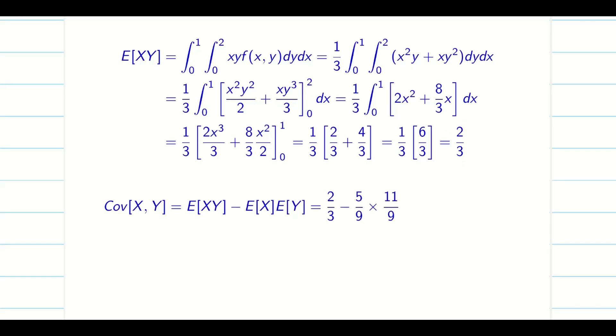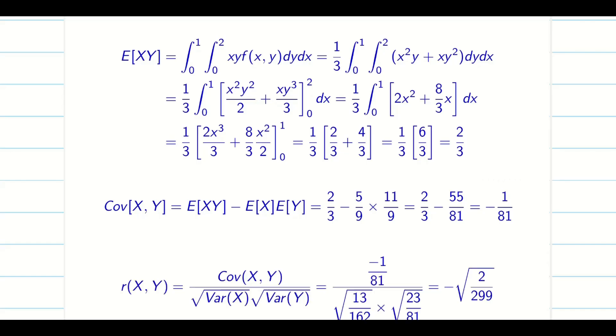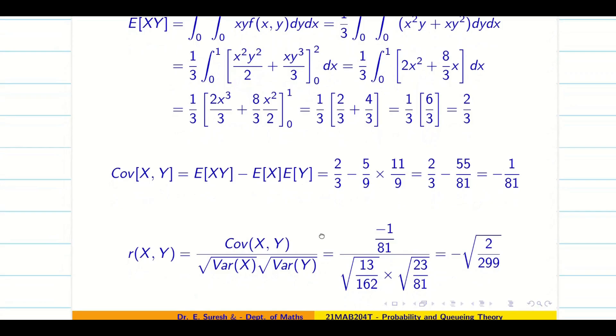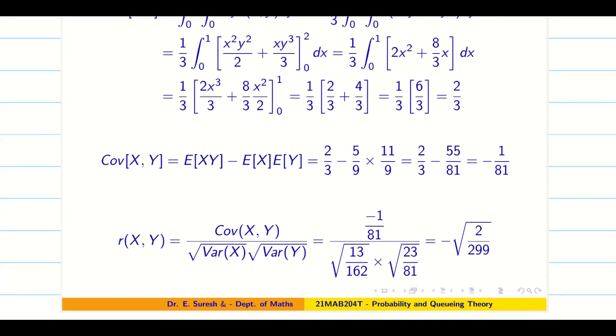Covariance we can find from this using a calculator through manual calculations. My covariance of x comma y is minus 1/81. Then immediately we go to the formula for correlation coefficient r. You can calculate. We found r is going to be negative.